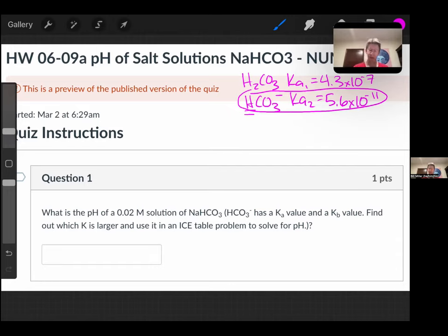If we think about what the conjugate acid is of bicarbonate, it will be H2CO3 carbonic acid. So if we want to find the Kb for bicarbonate, it's going to be Kw over Ka for carbonic acid, because that's how Ka and Kb values are related for conjugate pairs.